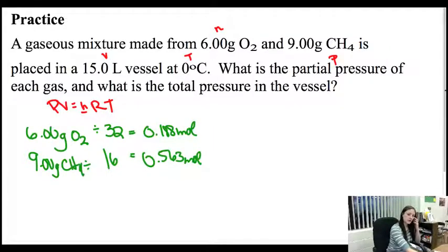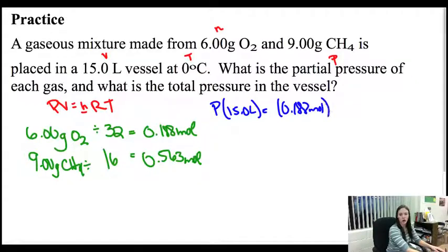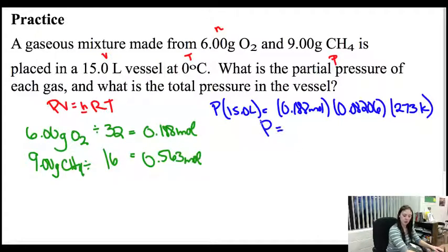So I do PV equals NRT for each one. P times my V which is 15, and for O2 is 0.188. R is always the same, 0.08206. And T is 273 because 0 plus 273 is 273. I solve for my pressure and I get a pressure of 0.281, and that's in atmospheres.